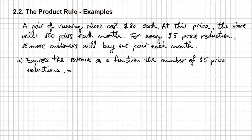Let's organize the information given to us in this problem so that we can make use of that knowledge and determine the revenue in regards to the number of price reductions. Initially the price is $80, meaning there is no price reduction, so n would be 0.